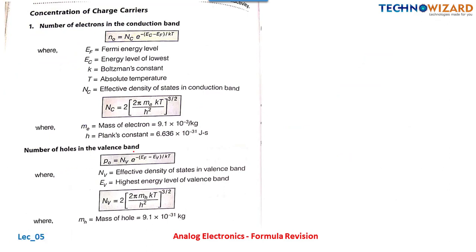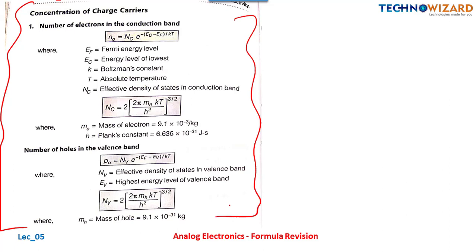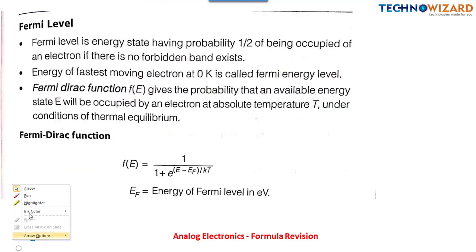The concentration of charge carriers section is somewhat at B.Tech level — questions based on this are unlikely for diploma-based exams. The formula for number of electrons in the conduction band is n = Nc · e^(−(Ec−EF)/kT), where Ec is the lowest conduction band energy, EF is the Fermi energy level, k is the Boltzmann constant, and T is temperature. The same form applies for the number of holes in the valence band.